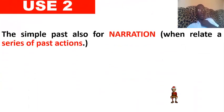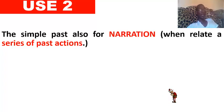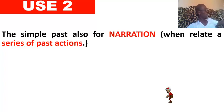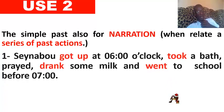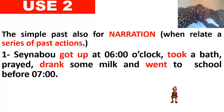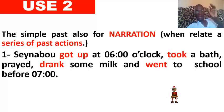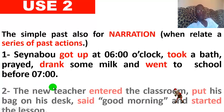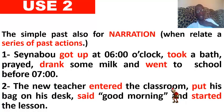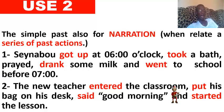Use number 2: the simple past is also used for narration — when you relate a series of past actions. For example: Saint Nabu got up at 6 o'clock, took her bath, prayed, drank some milk, and went to school before 7 o'clock. Also: The new teacher entered the classroom, put his bag on his desk, said good morning, and started the lesson. C'est une narration au passé, et c'est le preterite.